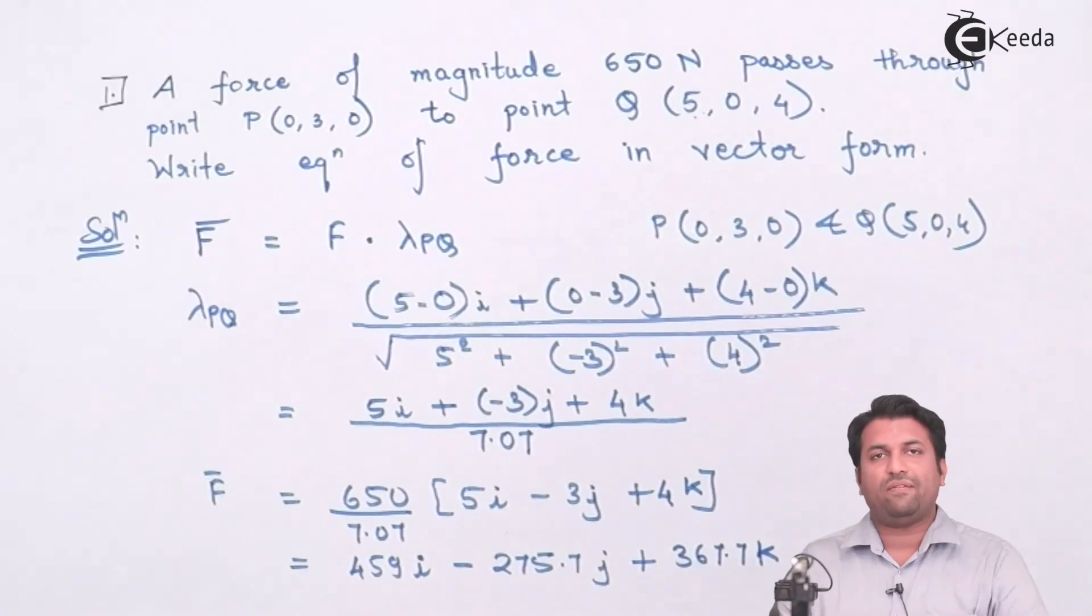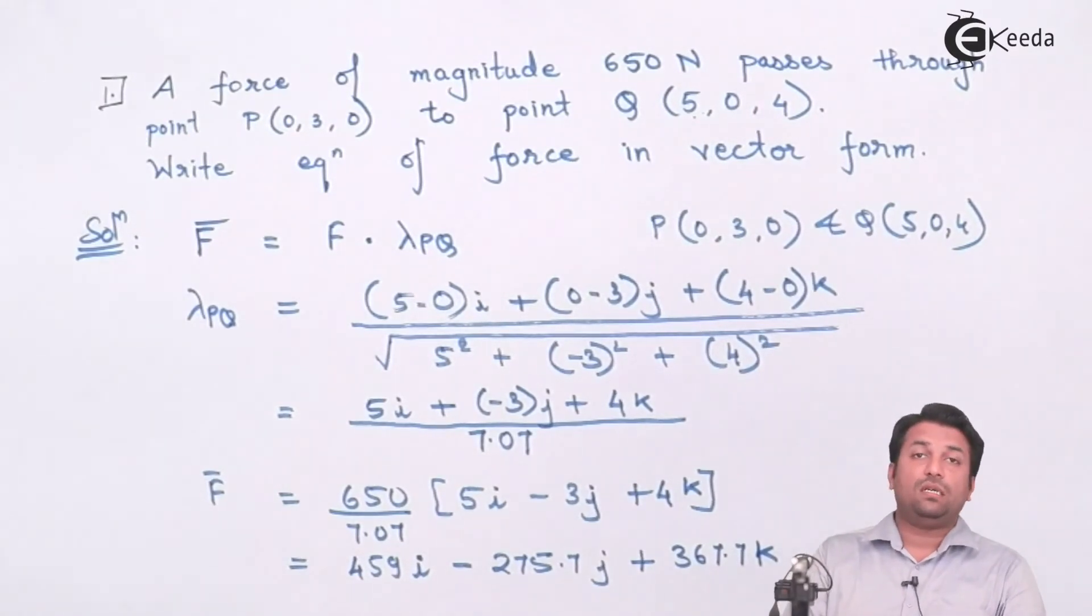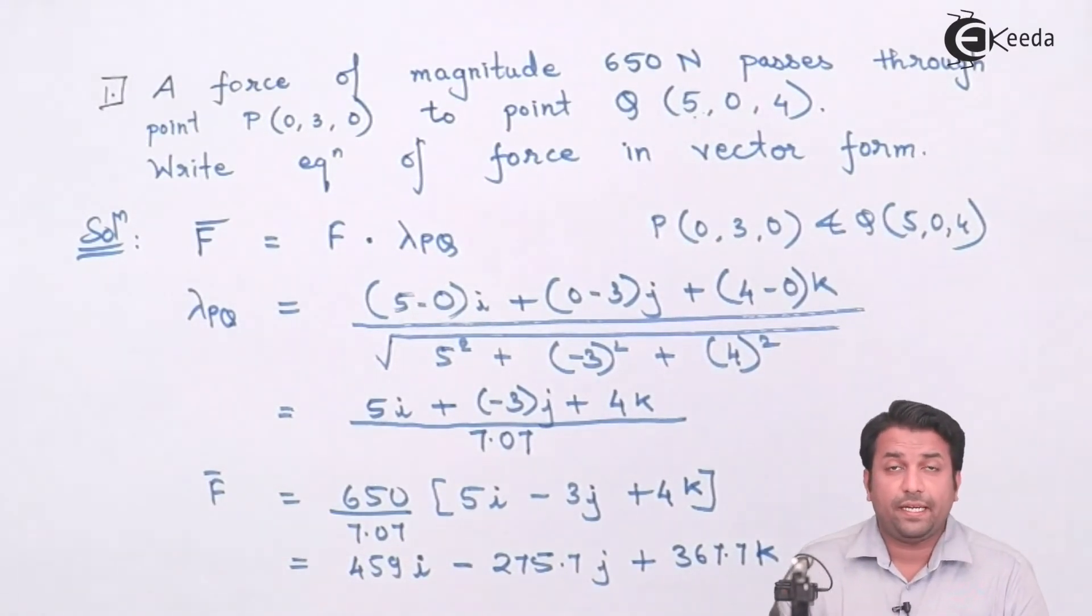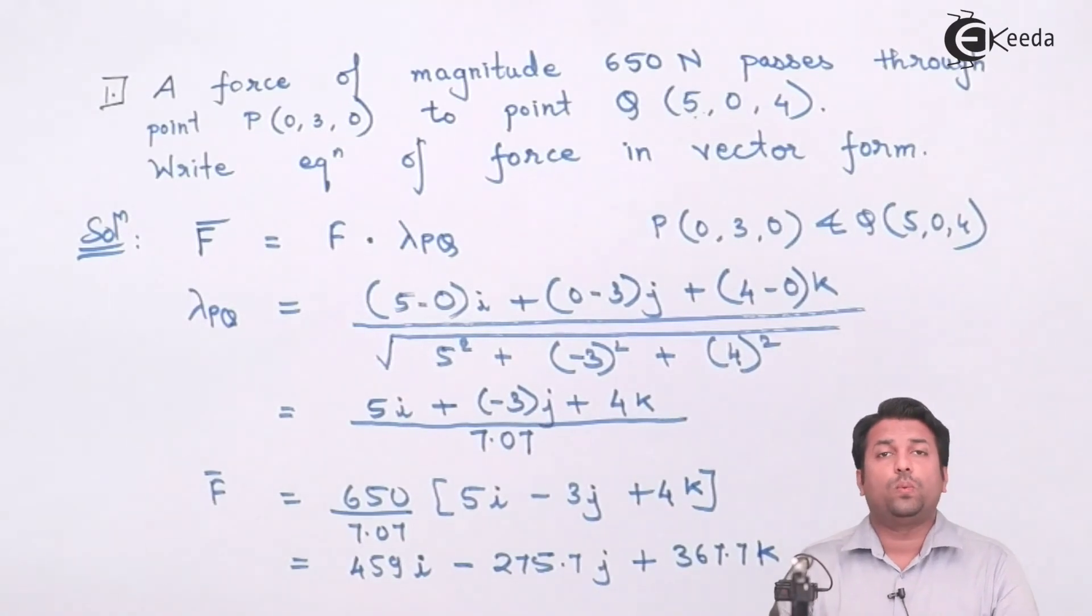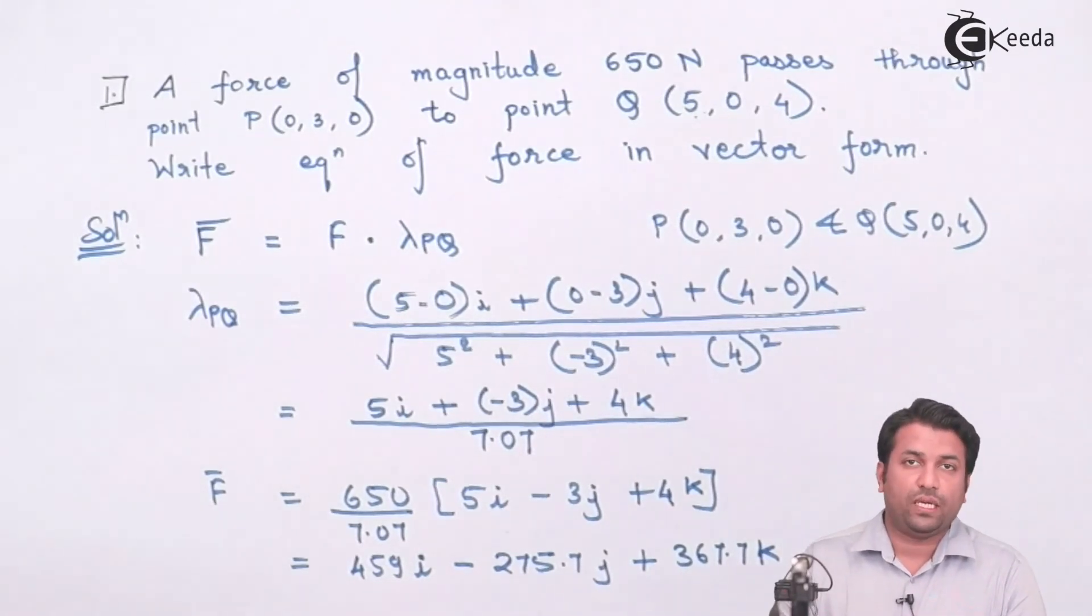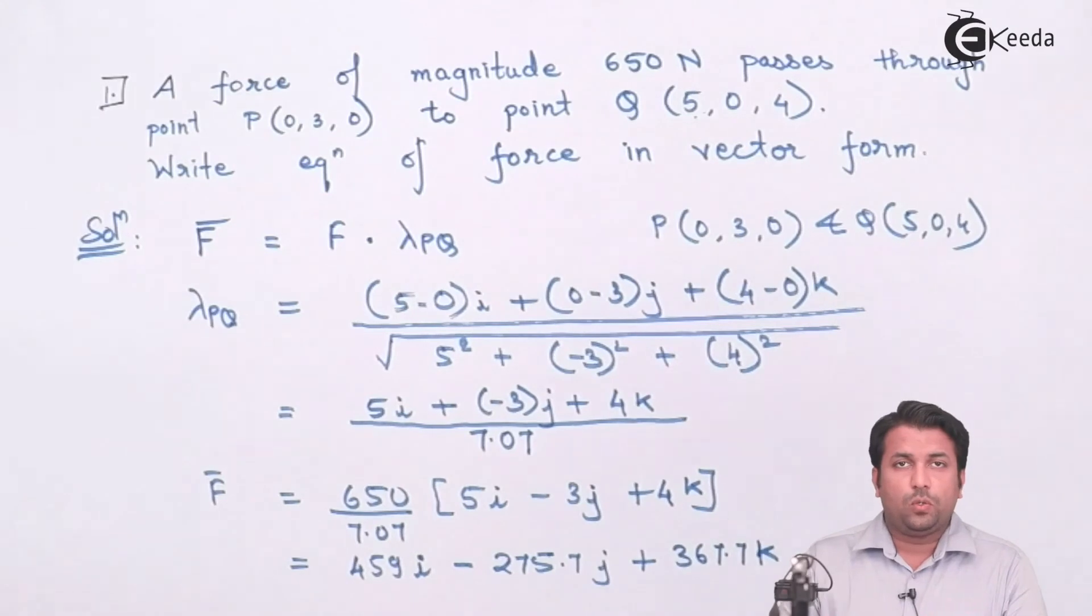So this is how we can find the force vector if the force magnitude and the points through which it is passing is given to me. All you have to do is first find out the unit vector from where the force is passing and then take the dot product.